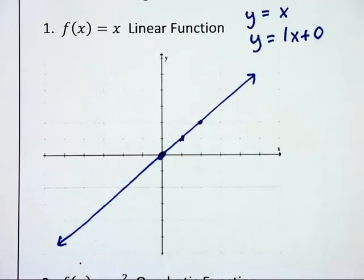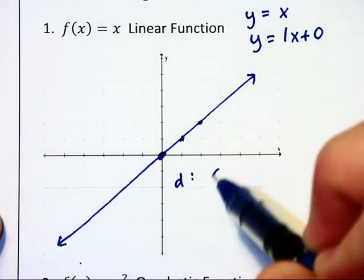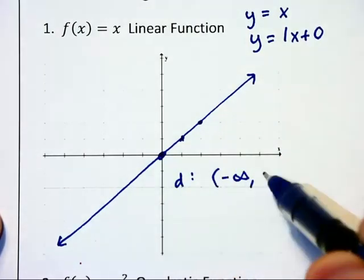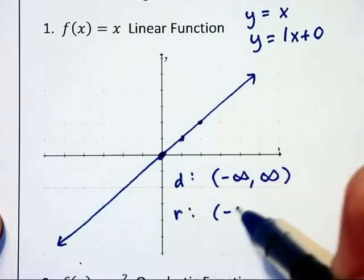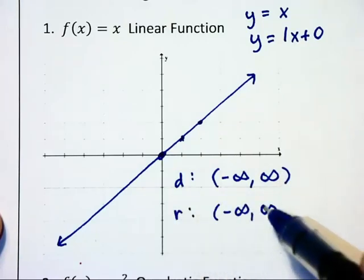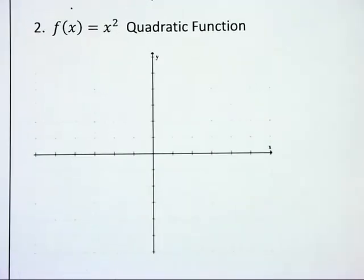Now they're asking for the domain and the range. Well the domain is going to be all real numbers because this graph goes left and right forever and the range will also be all real numbers because the graph extends infinitely both upward and downward.